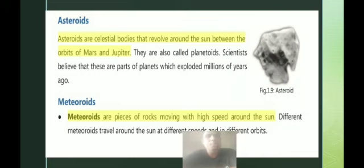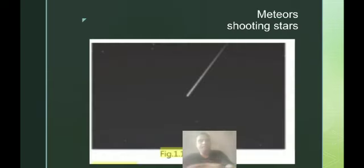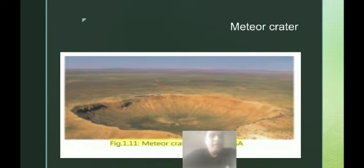Meteoroids are pieces of rocks moving with high speed around the sun. Meteors are also known as shooting stars. Meteor craters form when the meteors are not burnt properly and they come into the gravitational pull of the Earth and fall on the Earth, creating a crater, which you can see in the diagram.